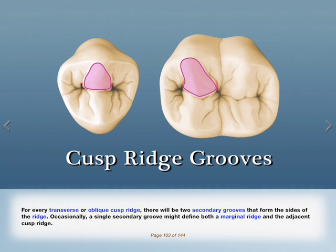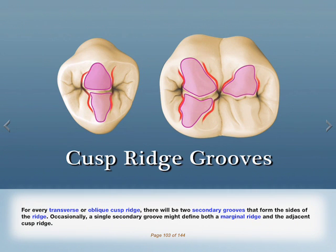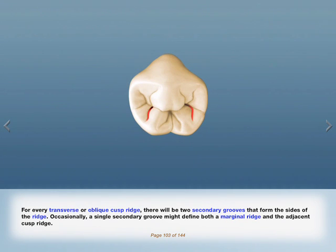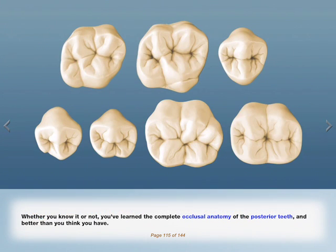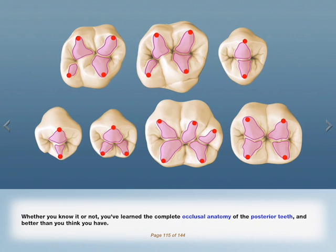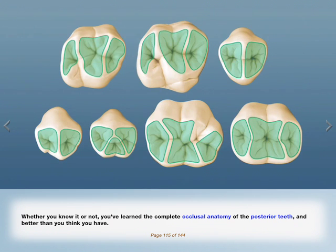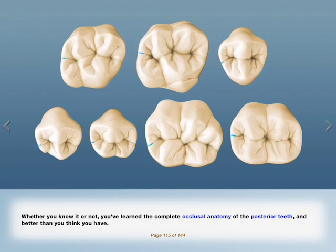For every transverse or oblique cusp ridge, there will be two secondary grooves that form the sides of the ridge. Occasionally, a single secondary groove might define both a marginal ridge and the adjacent cusp ridge. Whether you know it or not, you've learned the complete occlusal anatomy of the posterior teeth — and better than you think you have.